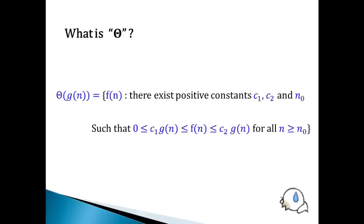Such that f(n) is not lower than c1 g(n) and not greater than c2 g(n) for all n equals or greater than n0. In general, we can say that f(n) is bounded by g(n), both lower and upper bound. So f(n) has the same growth rate as g(n).